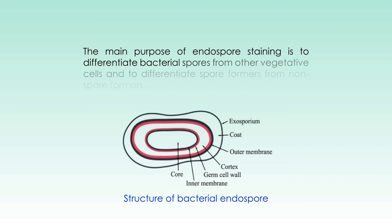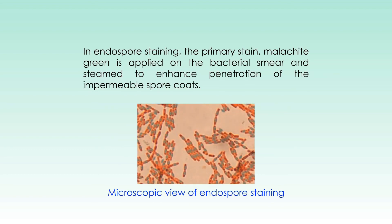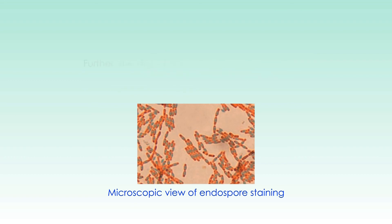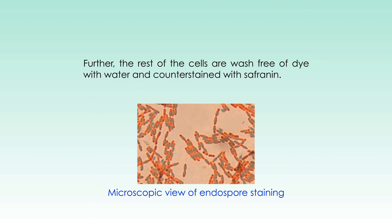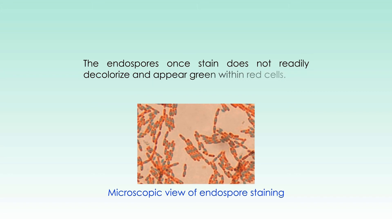The main purpose of endospore staining is to differentiate bacterial spores from other vegetative cells and to differentiate spore formers from non-spore formers. In endospore staining, the primary stain, malachite green, is applied on the bacterial smear and steamed to enhance penetration of the impermeable spore coats. The rest of the cells are washed free of dye with water and counterstained with safranin. The endospores, once stained, do not readily decolorize and appear green within red cells.